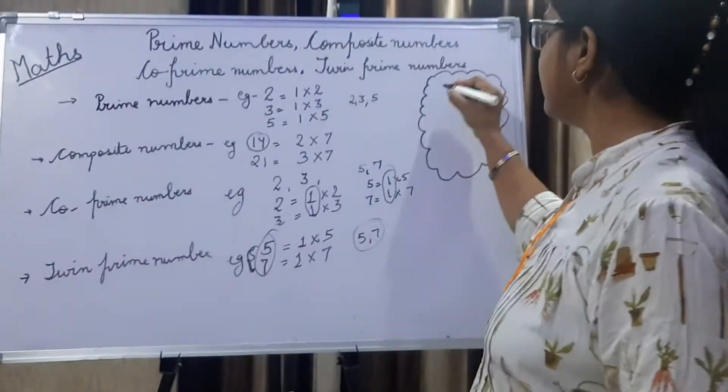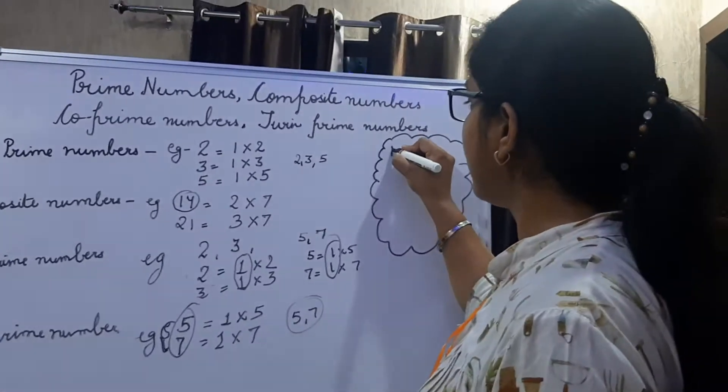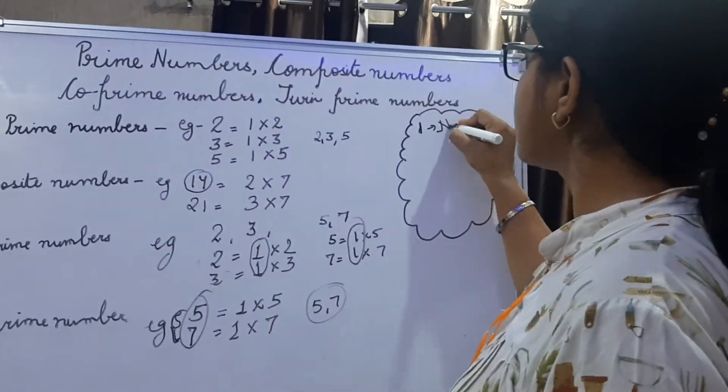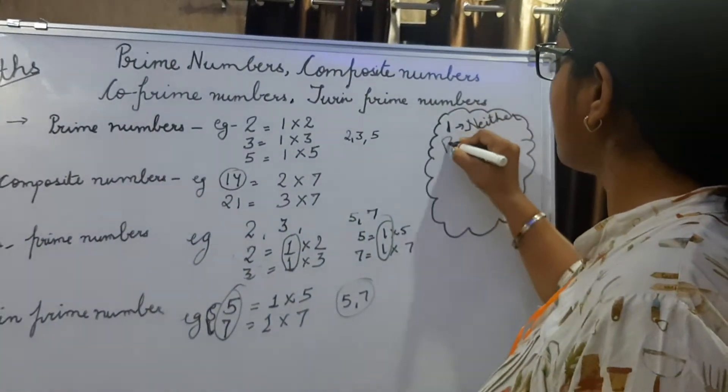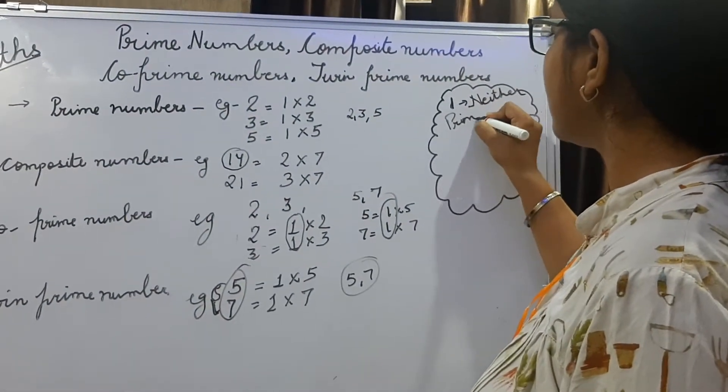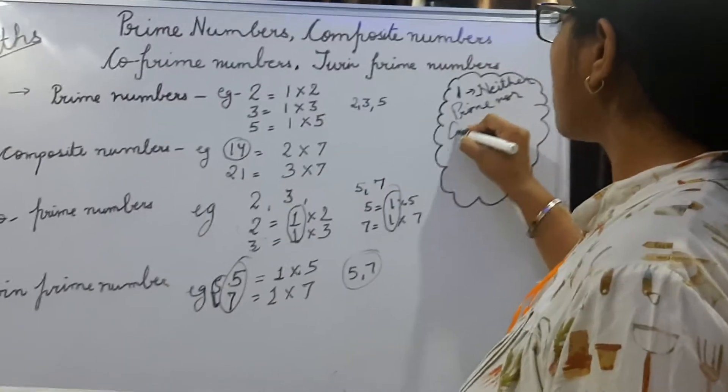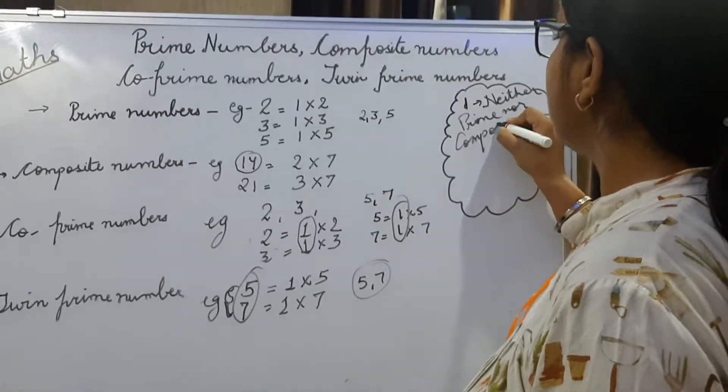One important thing to remember: one is neither prime nor composite. One is not a prime number, not even composite.